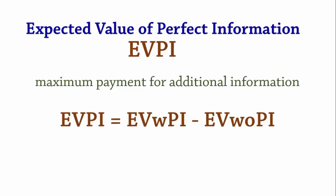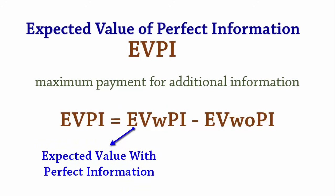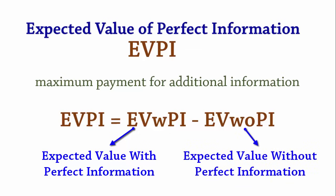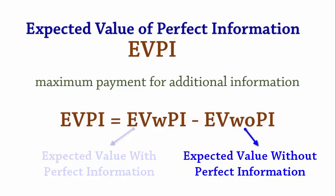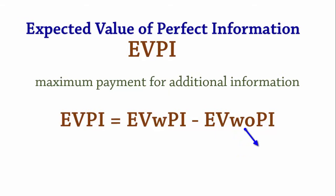The formula for the expected value of perfect information is: EVPI equals EVwithPI minus EVwithoutPI. EVwithPI is the expected payoff if perfect information about the states of nature is known. EVwithoutPI is the expected value without perfect information, which is the best expected payoff without additional information — that is, the maximum EMV.